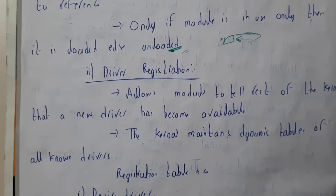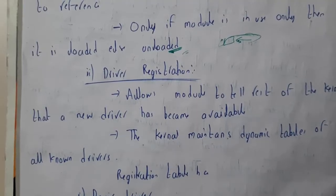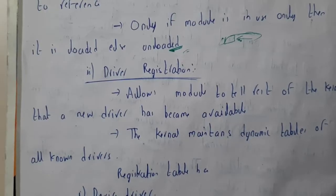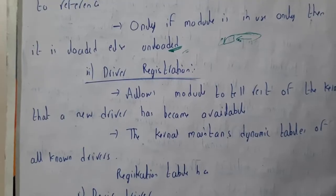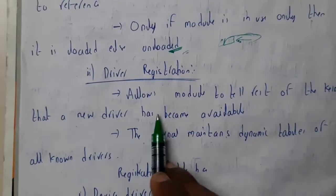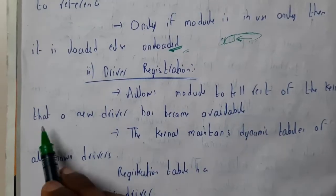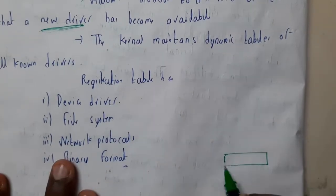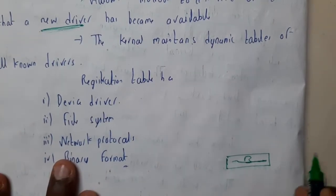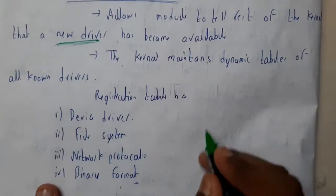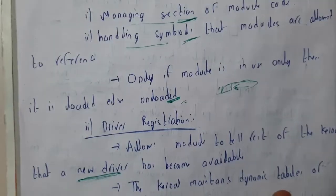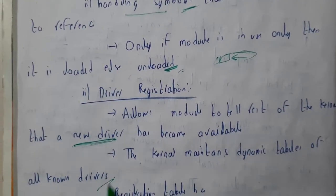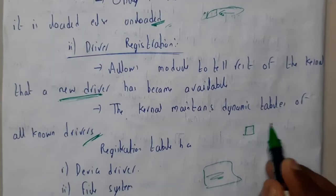The next topic is driver registration. Driver registration is like registration for a vehicle — each and every driver for our devices, network devices, file system, and everything needs to be registered with the kernel. This allows modules to tell the rest of the kernel that a new device is connected. On Windows, when you connect a new device like a USB, you get a notification and the driver installation is done — that is because of driver registration. The kernel maintains dynamic tables of known drivers.